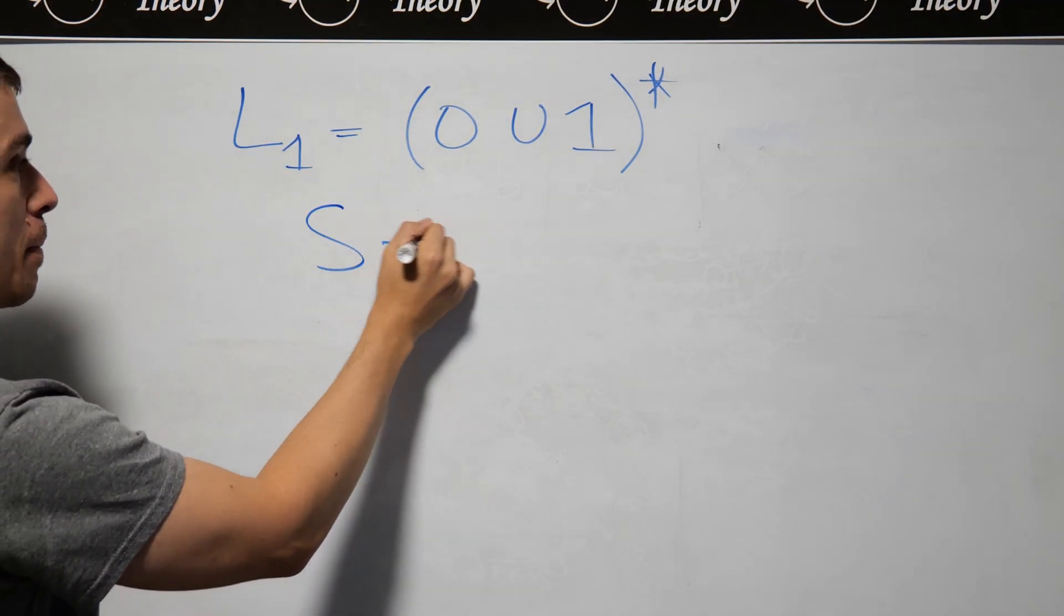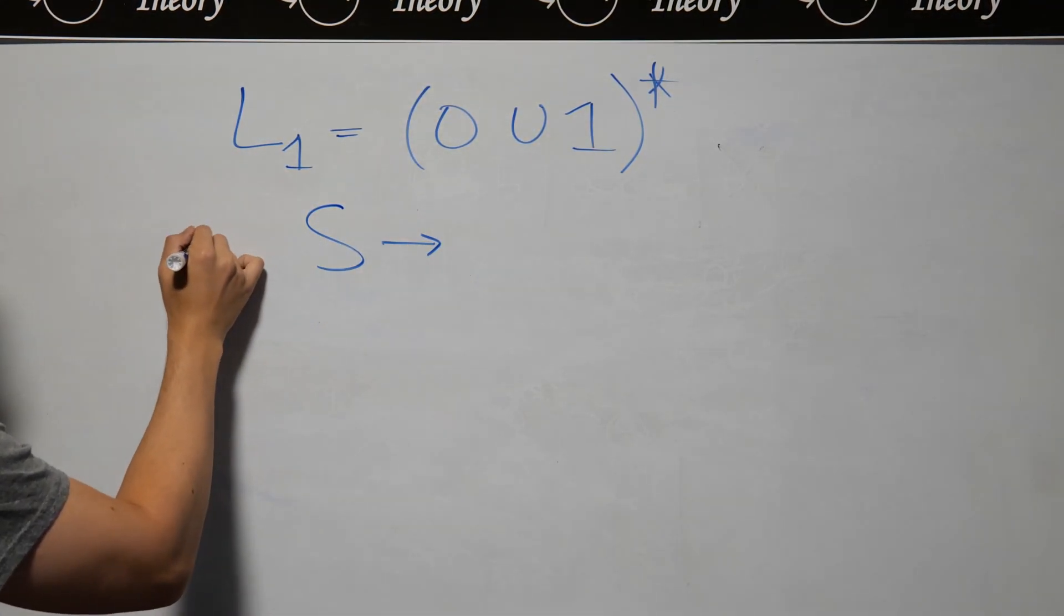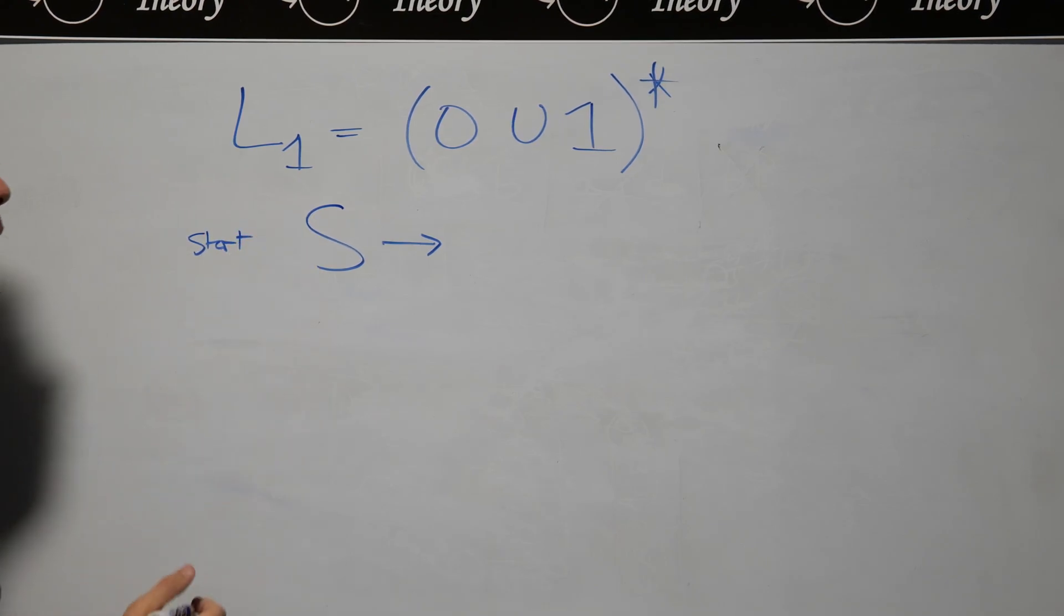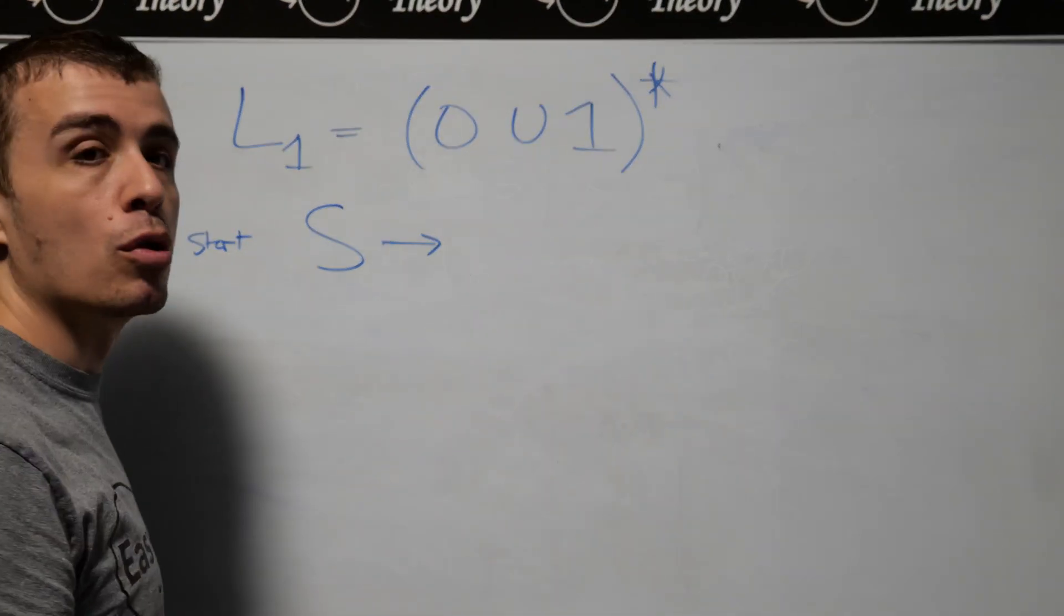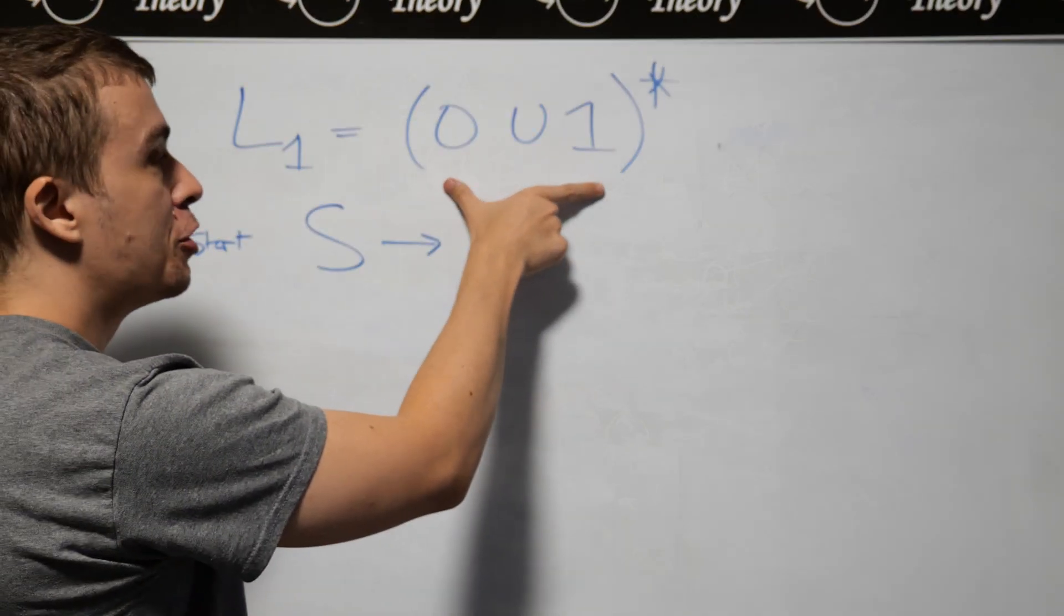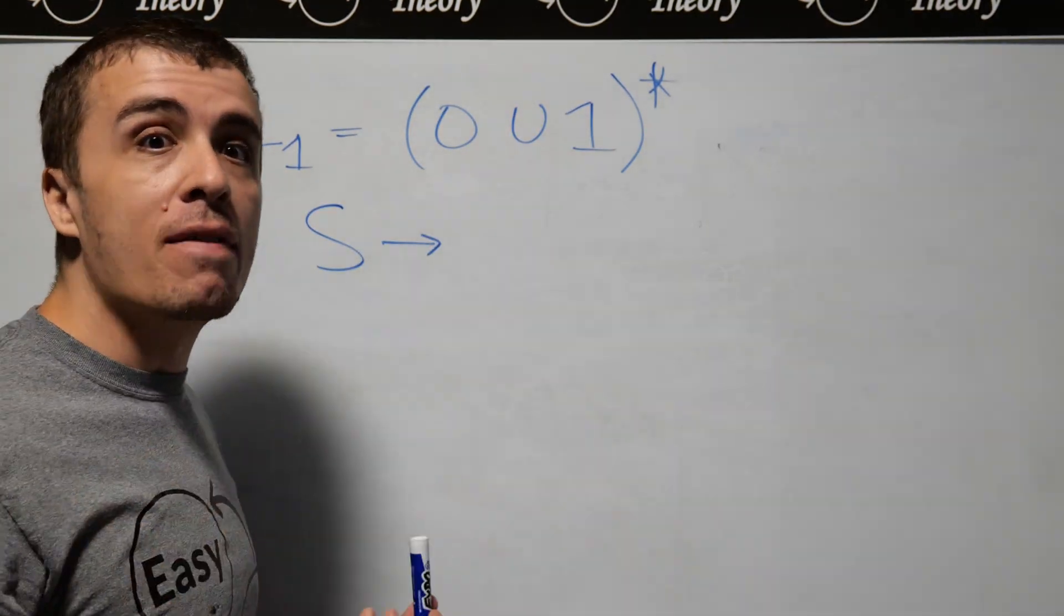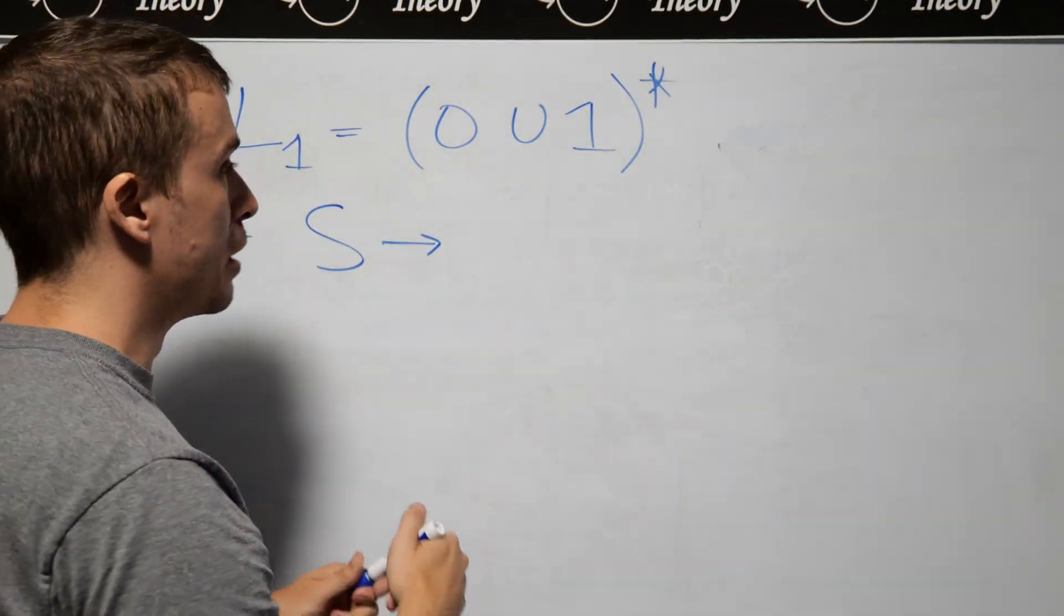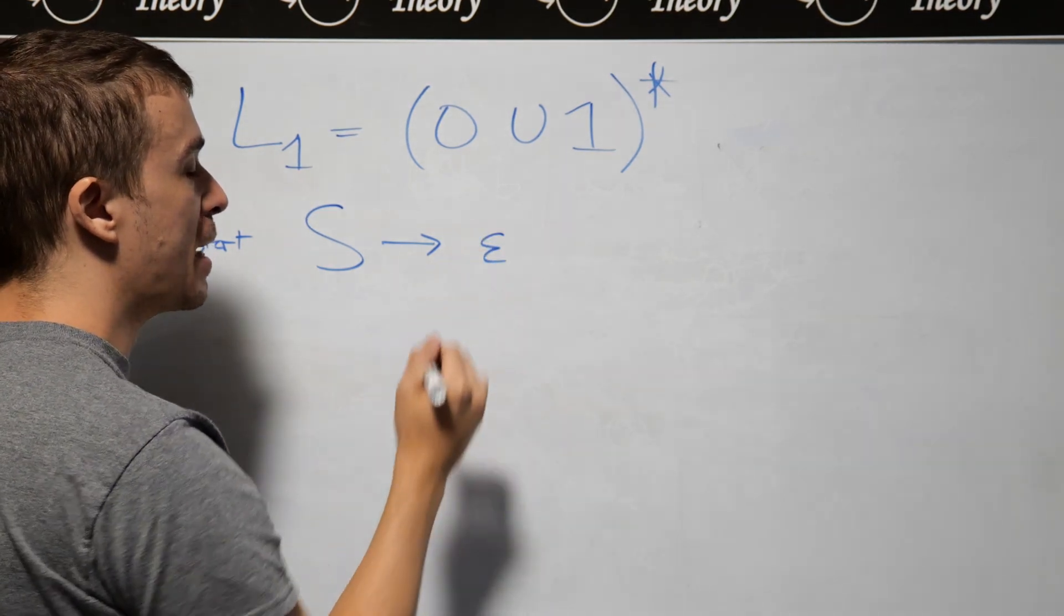So we need a start variable. I'm going to call it S here, so this is the start variable, and we need a rule to actually generate the strings. Well, one string here that is obviously in this set is the empty string. So I need to allow ourselves to make the empty string.